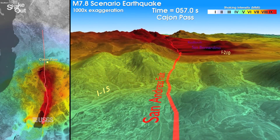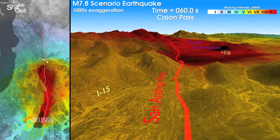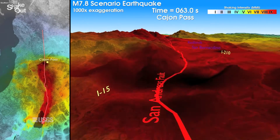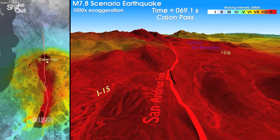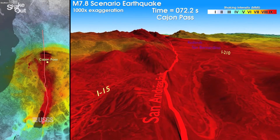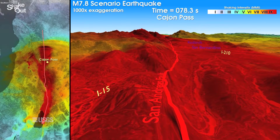Earthquakes happen because of slip on faults in the crust. Those faults are under a great amount of stress due to the forces of plate tectonics. Earthquakes can be near or far, they can be shallow or deep, they can be large or small, and those features will determine what kind of shaking is experienced, whether that shaking is violent or gentle, whether it's short or long-lasting.